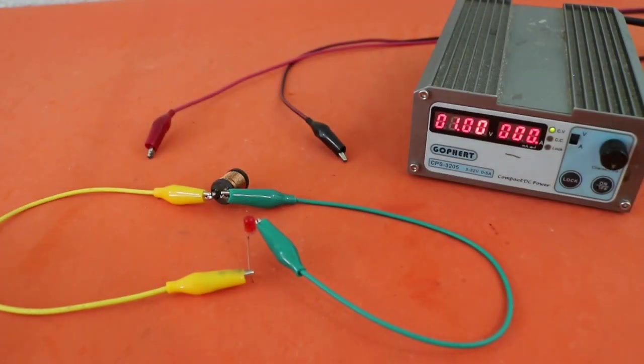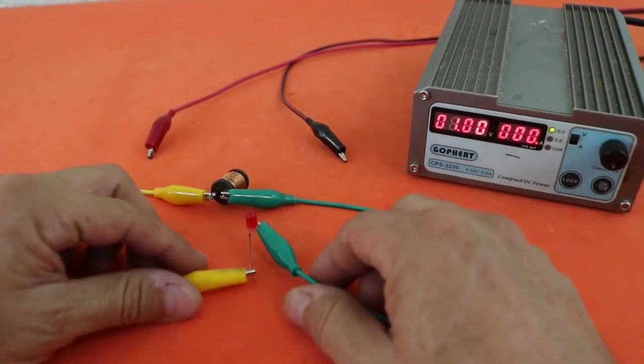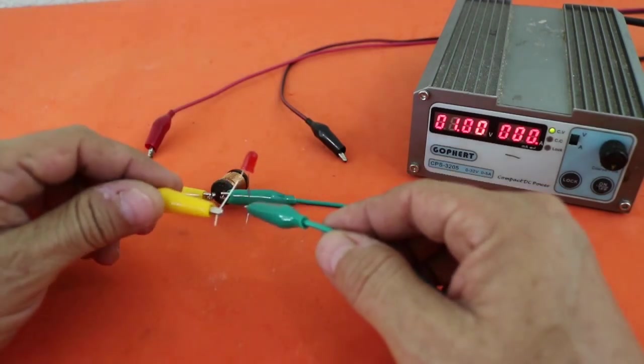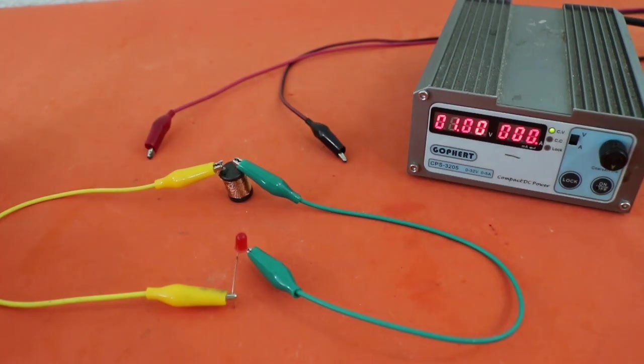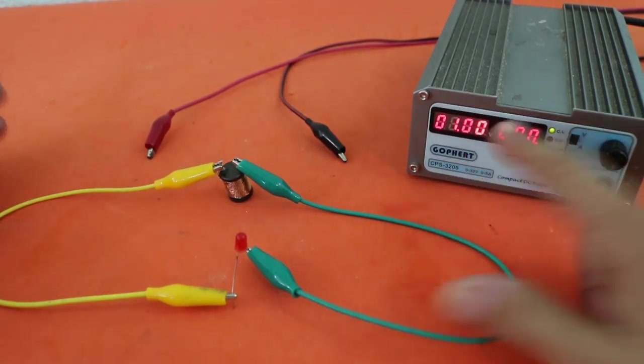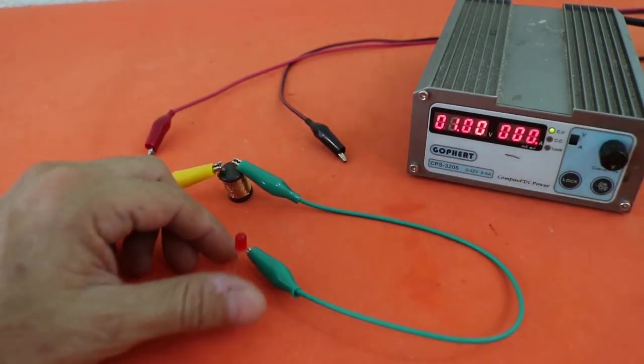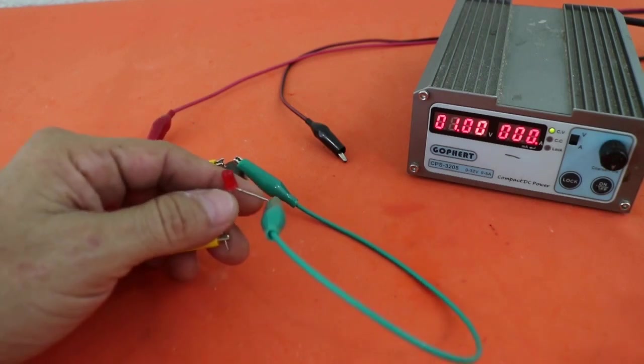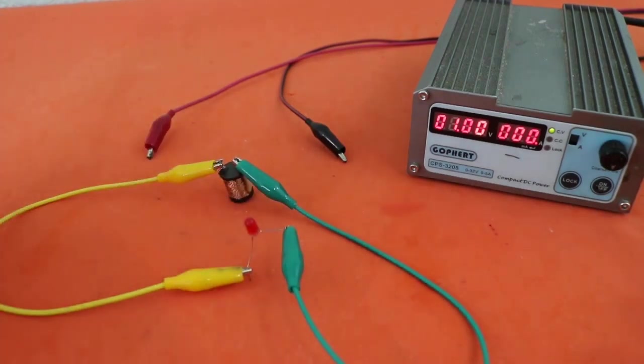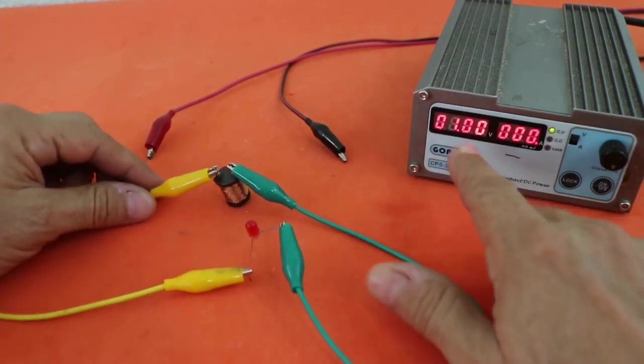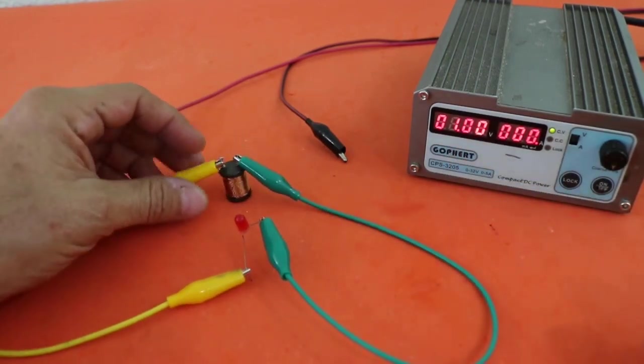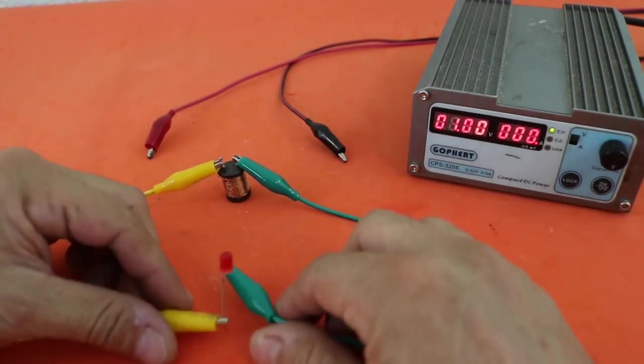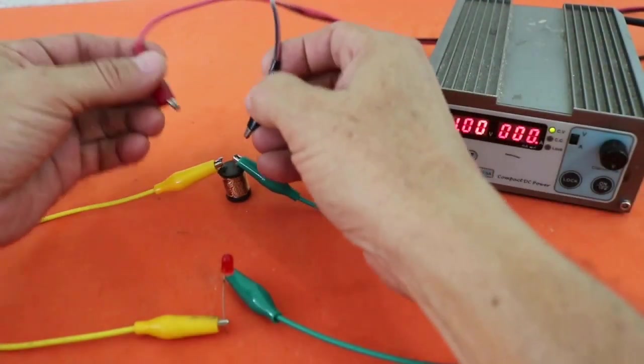To illustrate this effect, I will connect this LED to the inductor and I will apply a voltage of 1 volt. As you may know, you need at least 2 or 2.5 volts to turn on an LED. 1 volt is not enough, but the effect of the inductance will increase the voltage and the LED will turn on. I'm going to connect.